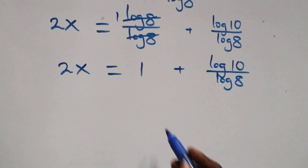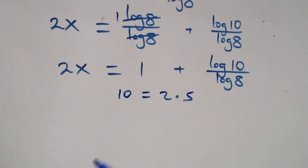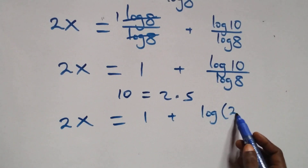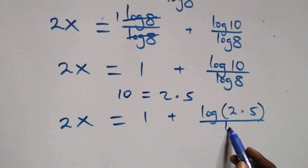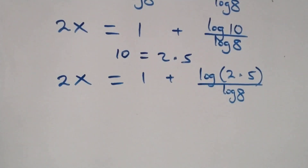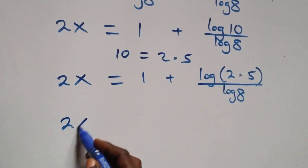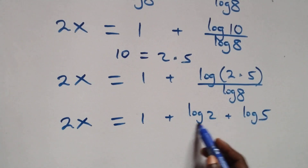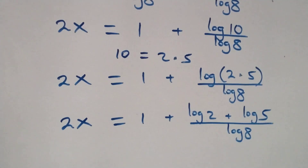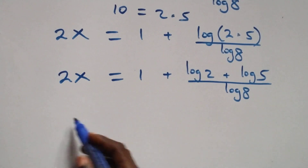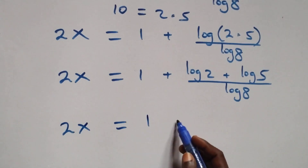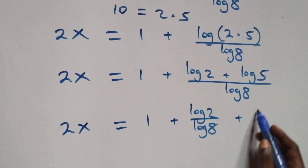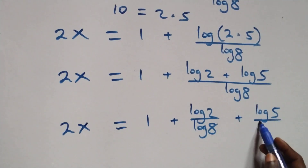From here we can write 10 as 2 times 5, so what we have becomes 2x equals 1 plus log(2 times 5) over log 8. This also follows the law of logarithms, so we can write this as 2x equals 1 plus (log 2 plus log 5) over log 8. We then separate again: 2x equals 1 plus log 2 over log 8 plus log 5 over log 8.